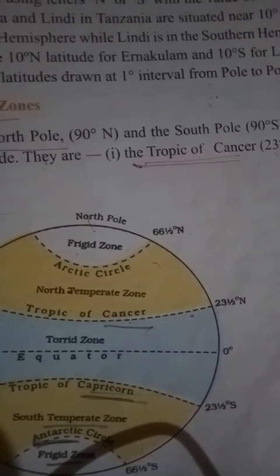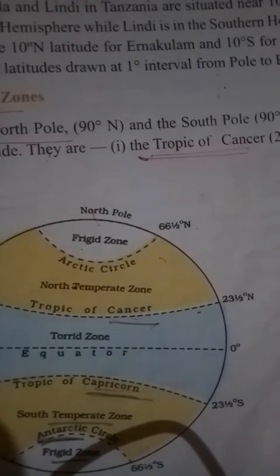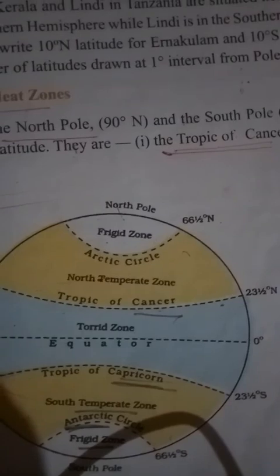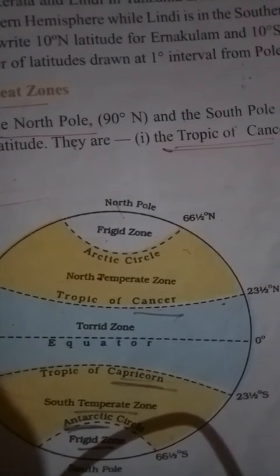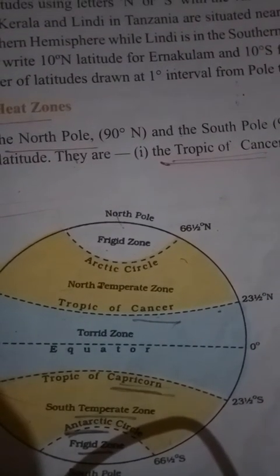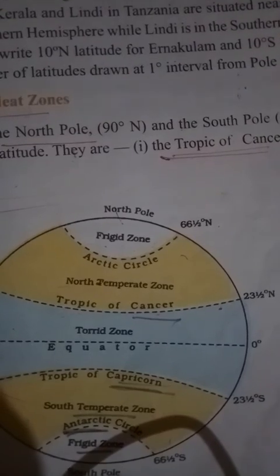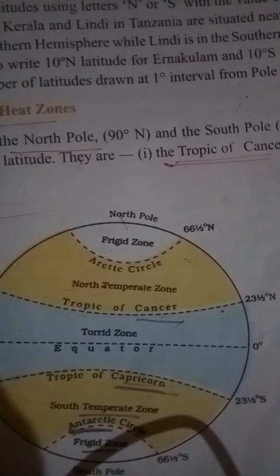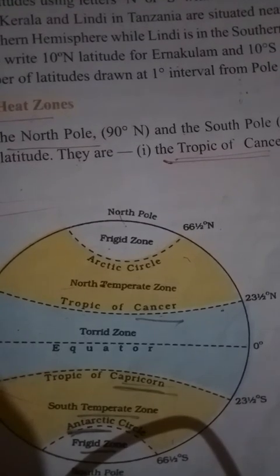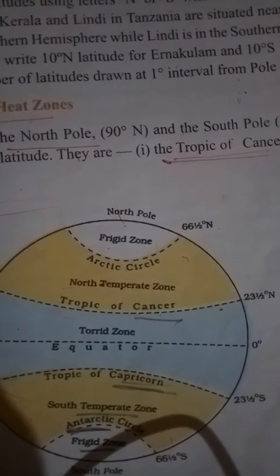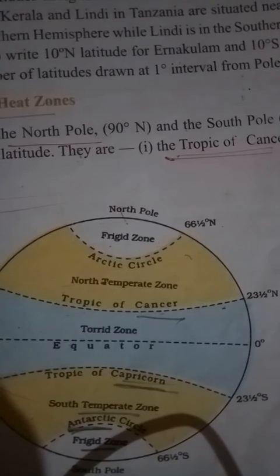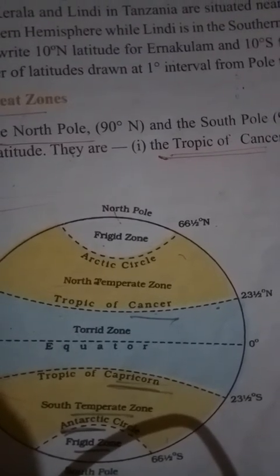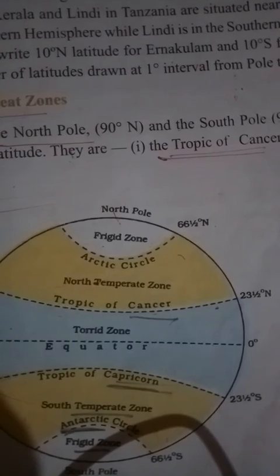To summarize: the North Pole is located at 90 degrees N and the South Pole is located at 90 degrees S. So these are the two poles — North Pole and South Pole — along with the equator, serving as our key reference points.